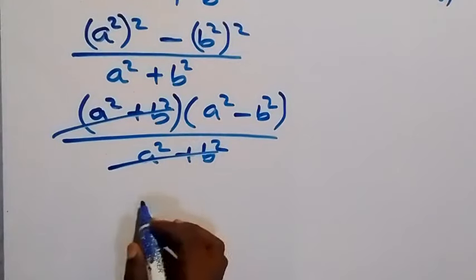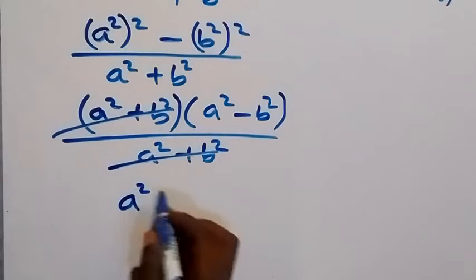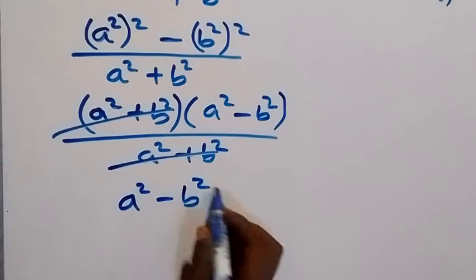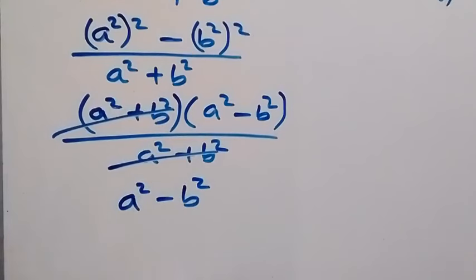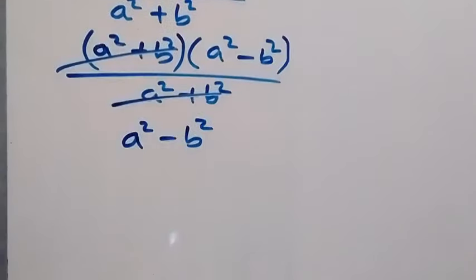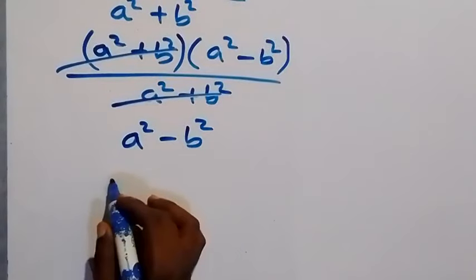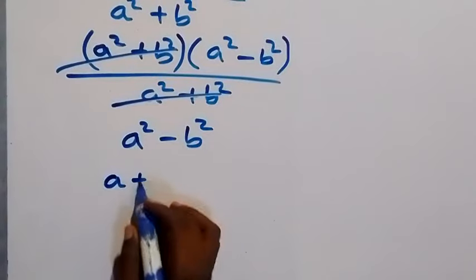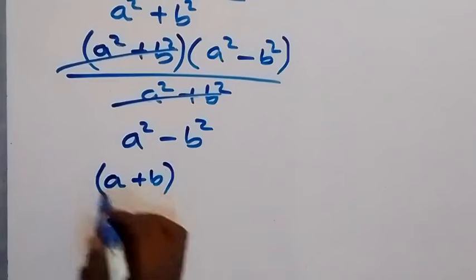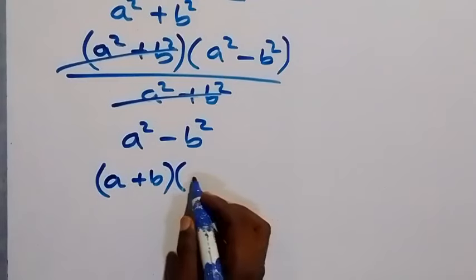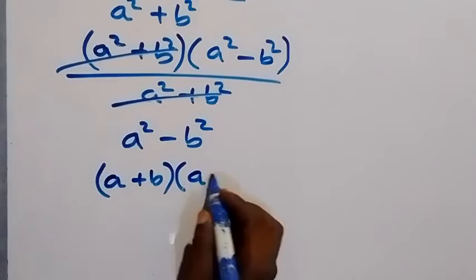Then what you are left with is just a squared minus b squared. Then also applying the difference of two squares to this, we can write this as simply a plus b, multiplied by a minus b.